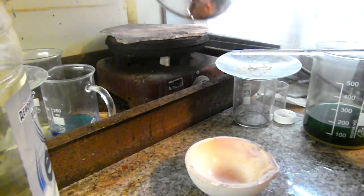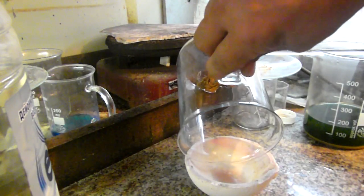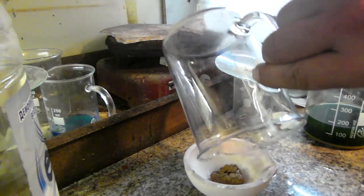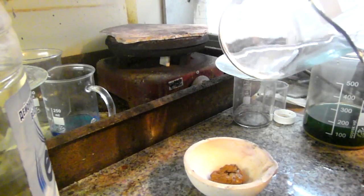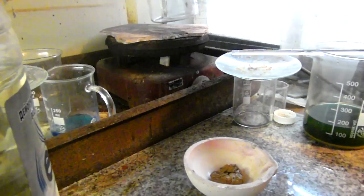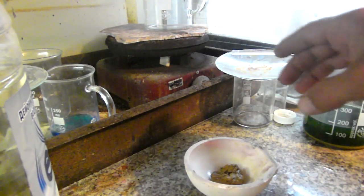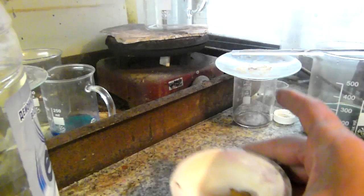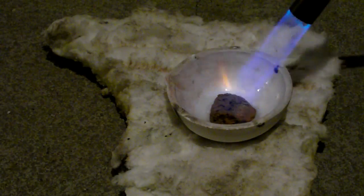Then I moved the gold while still moist to the melting dish. Drying the gold sponge with a soft flame.